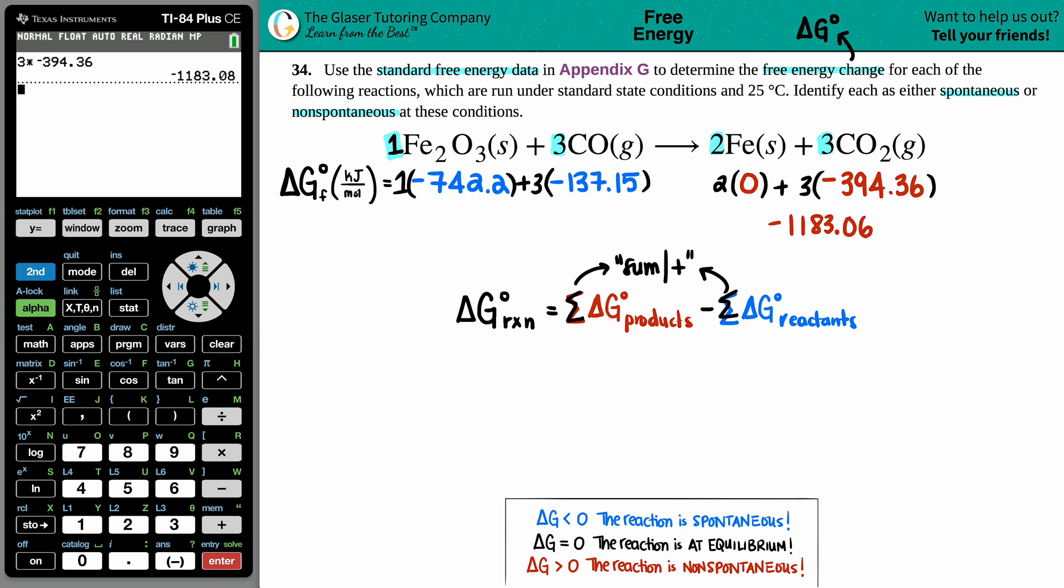Now I'm going to do the reactant side. This is the same number plus this. Let's say negative 742.2 plus three times—the calculator will understand what operations need to be done first—and then enter this out. I got negative 1153.65.